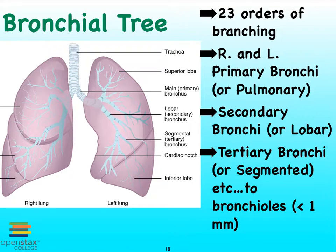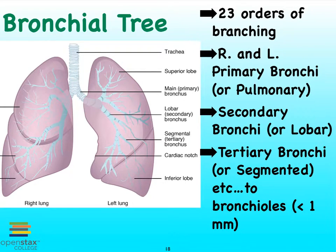Once the trachea begins to branch first into bronchi — singular bronchus — and eventually bronchioles, we form the so-called bronchial tree. And within that bronchial tree, we see 23 essentially hierarchical levels of branching.